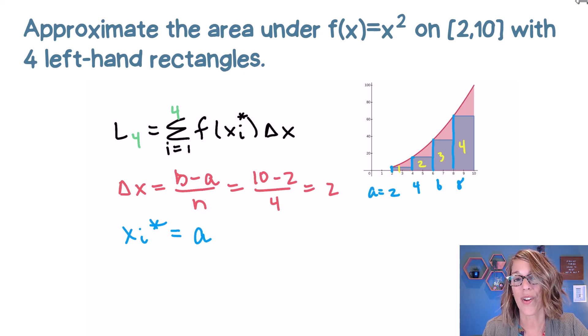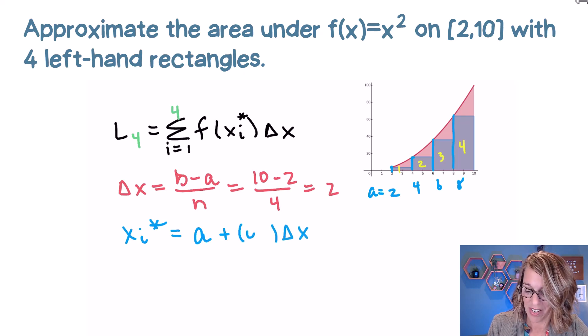But we want to start at two, I don't want to add any delta x's, I don't want to add my width. So when I say I'm going to add a delta x, I want to start by adding zero delta x's. So when i is equal to one, I need this to be i minus one, this will start me off with zero delta x's.